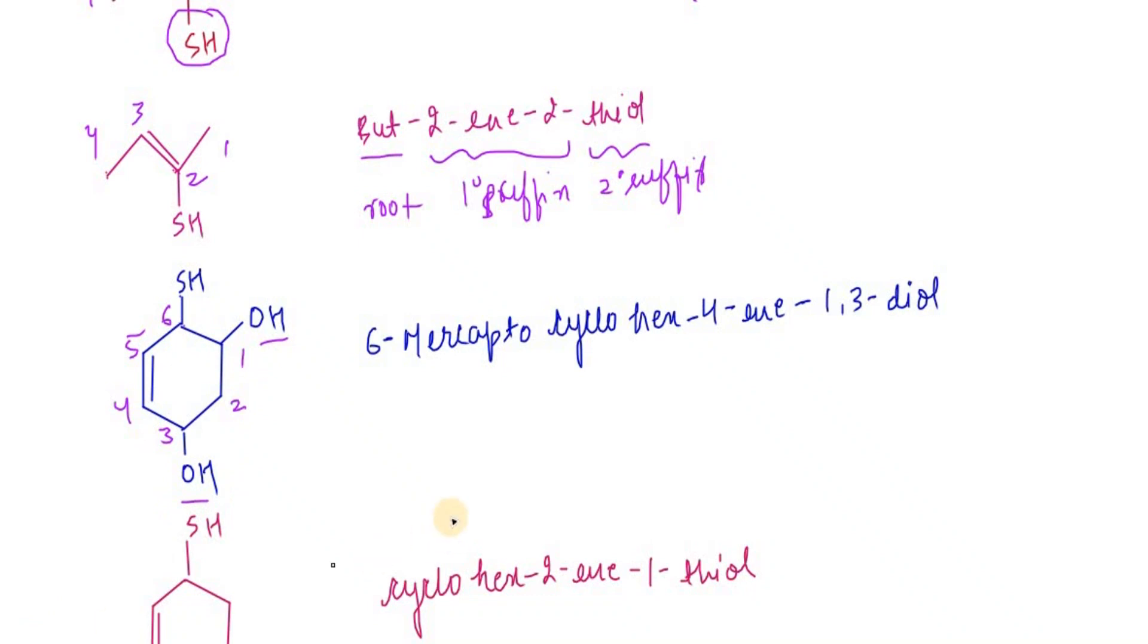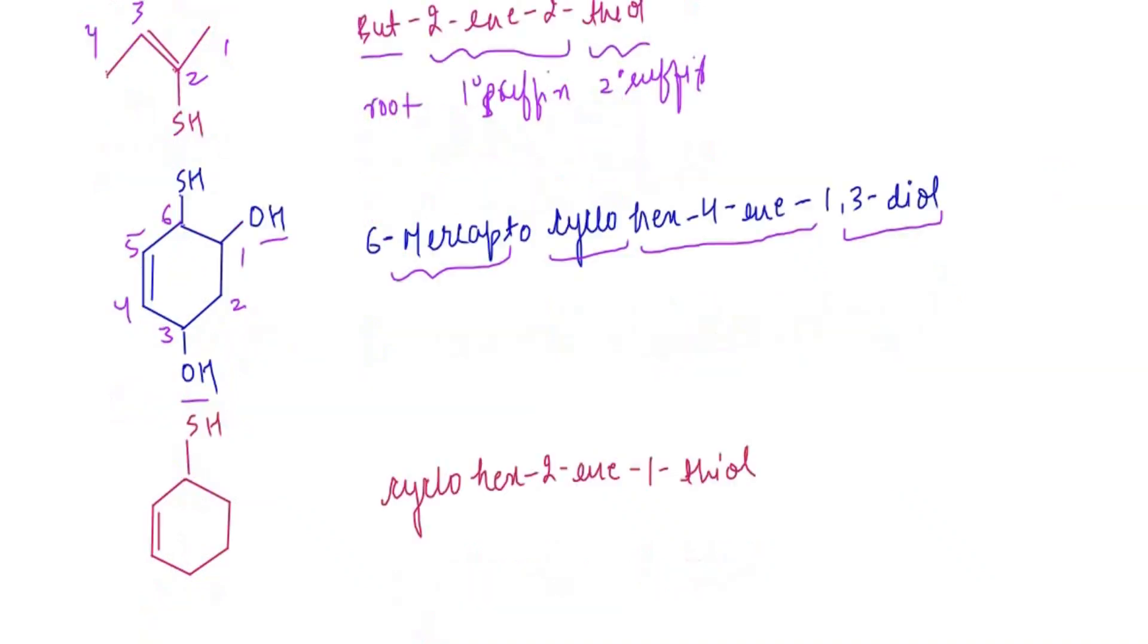Cyclohex-4-in-1,3-diol, so this is 6-mercapto. This is the 1 degree prefix we use, then this is root word, then this is 1 degree suffix and 2 degree suffix we are using here.